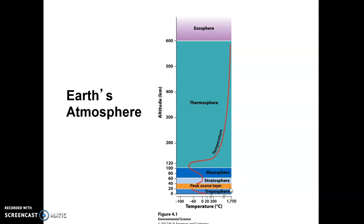From 10 to about 30 miles is a layer called the stratosphere. The upper part of the stratosphere is shown here in light blue, but the lower part of the stratosphere, shown here in orange, is called the peak ozone layer. Ozone is a molecule of three oxygen atoms — O3 — and it is natural for it to be in the stratosphere.